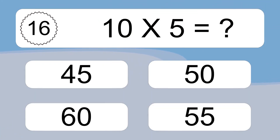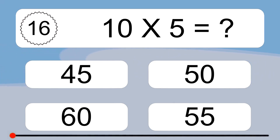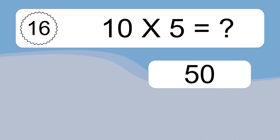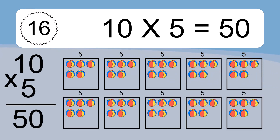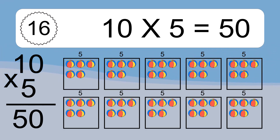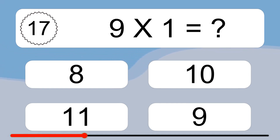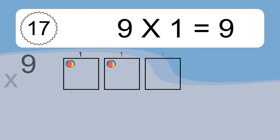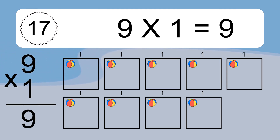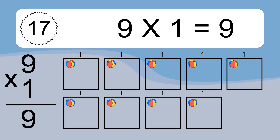9 times 1 equals what? 9 times 1 equals 9. We have 9 boxes, and each box has 1 colorful ball inside. If you count all the balls in all the boxes together, you will have 9 times 1 balls. This equals 9 balls.